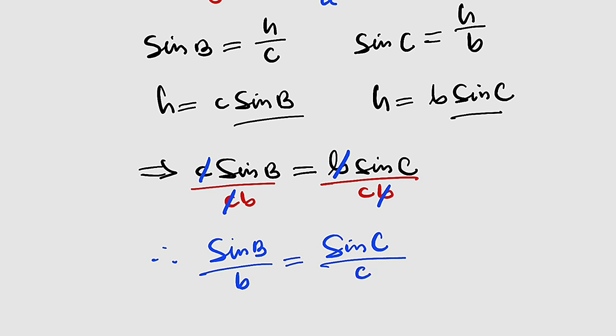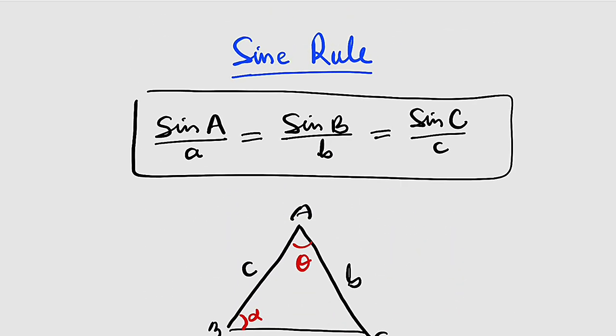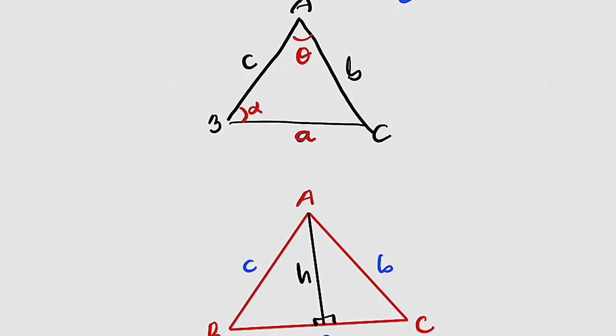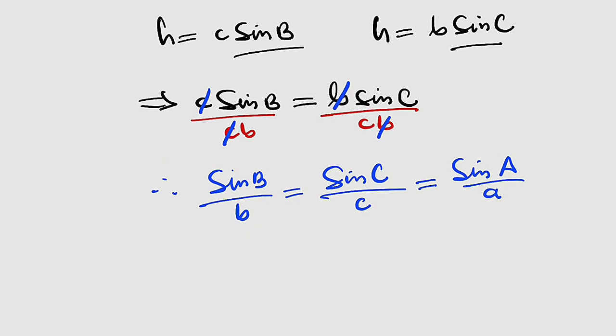If you partition the triangle in other direction, you are going to obtain the other relationship, which is sine of A divided by small letter a. And hence, we have just established the relationship between these angles and their respective sides. You can see that here is exactly what we have just proven. Subsequently, we are going to see how we can apply this formula in finding the missing sides and angles of a triangle other than right-angled triangle.